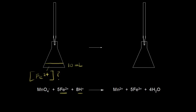To our iron 2+ solution, we're going to add some potassium permanganate — KMnO₄. The concentration of our potassium permanganate is 0.02 molar, and potassium permanganate is of course the source of permanganate anions, because this dissociates into K⁺ and MnO₄⁻. So we have a source of permanganate anions.